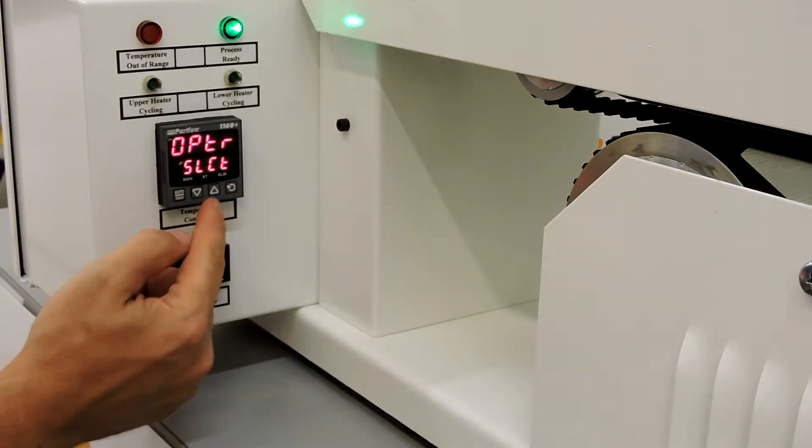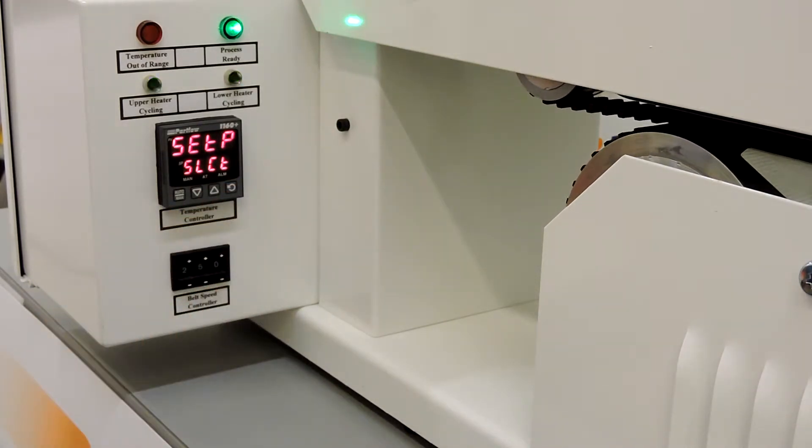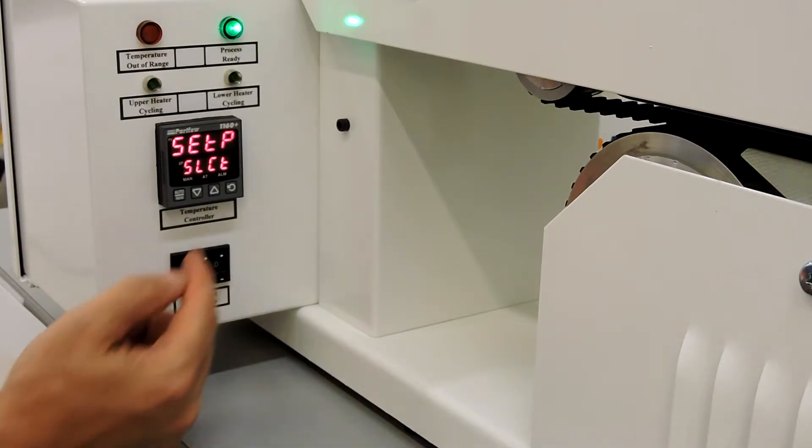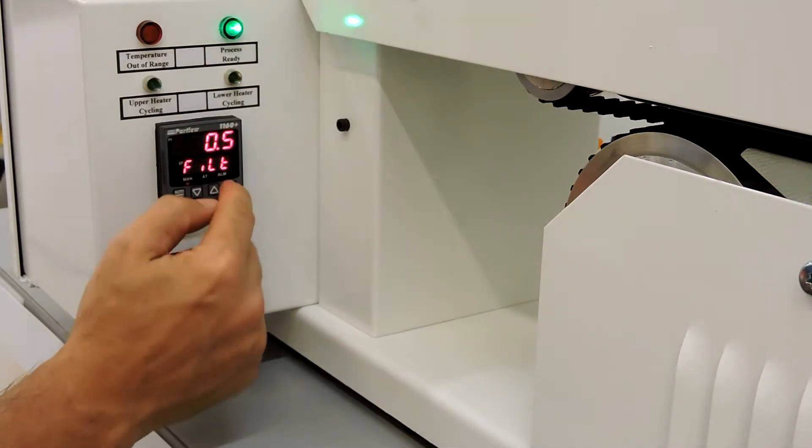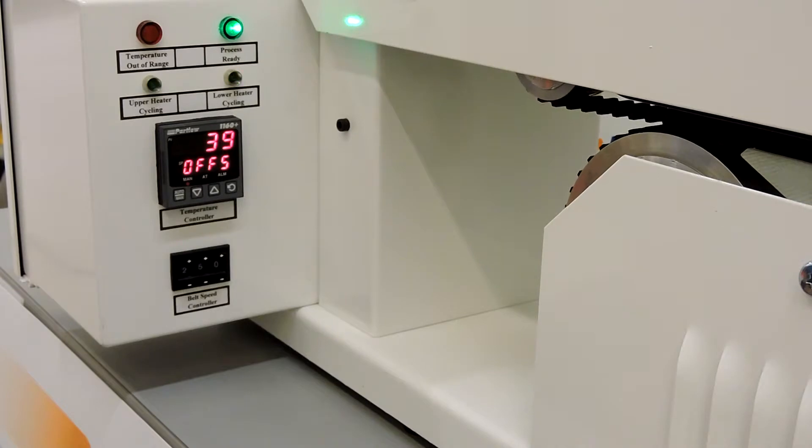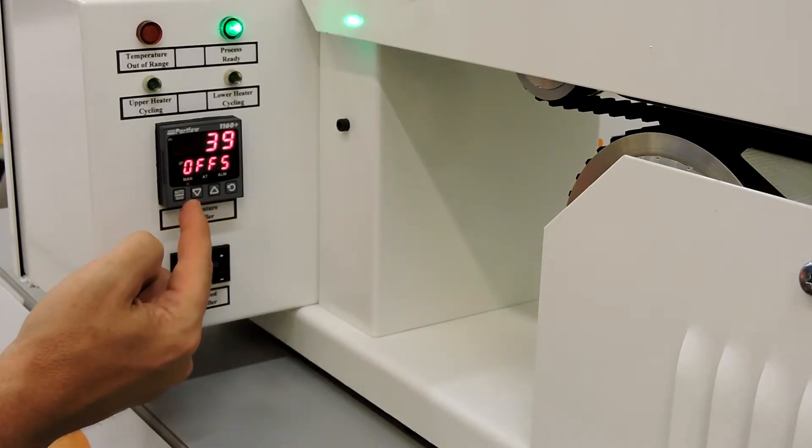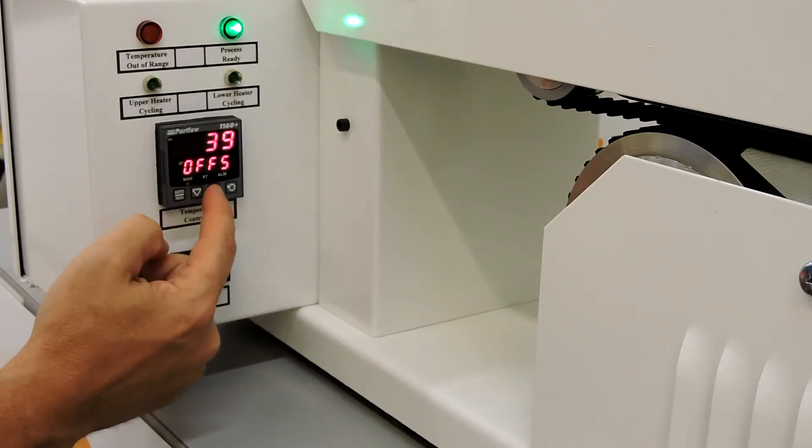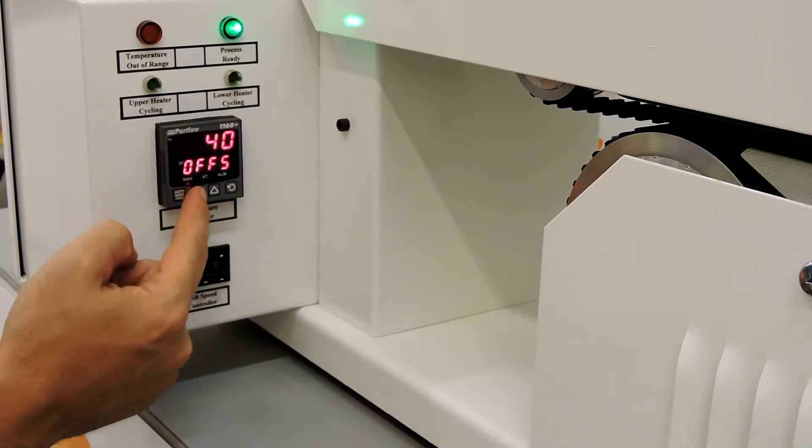Press the up arrow key once to display the setup mode. Press the scroll key twice to display the offset mode. Adjust the offset controller by using the up and down arrow keys. The up arrow key is used if the temperature is too high. The down arrow key is used if the temperature is too low.